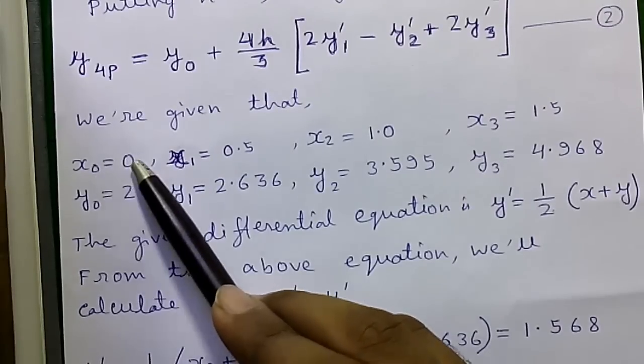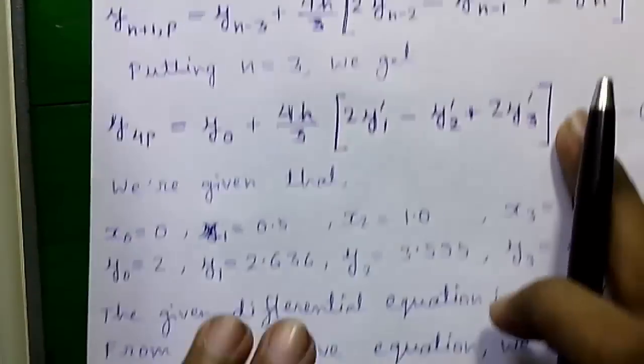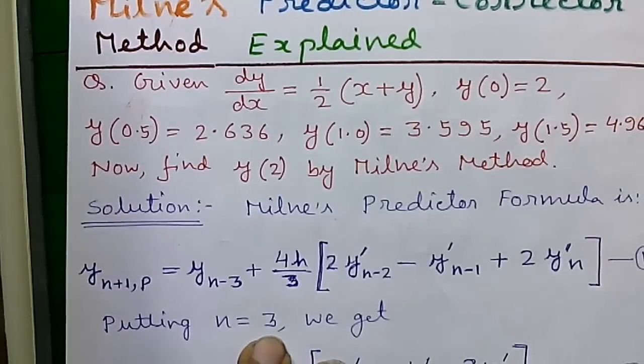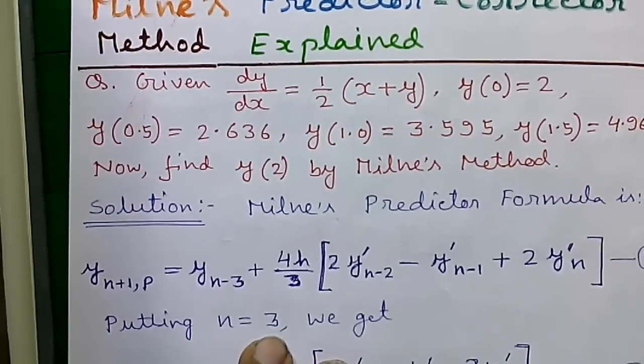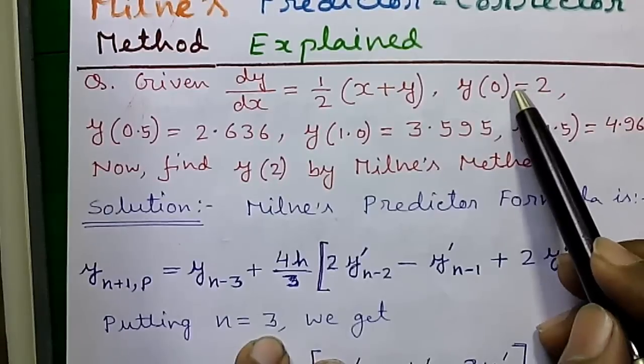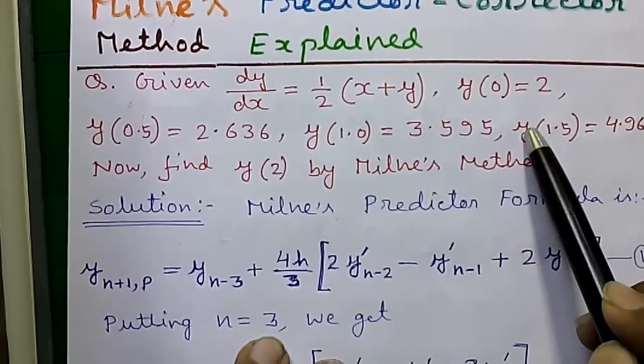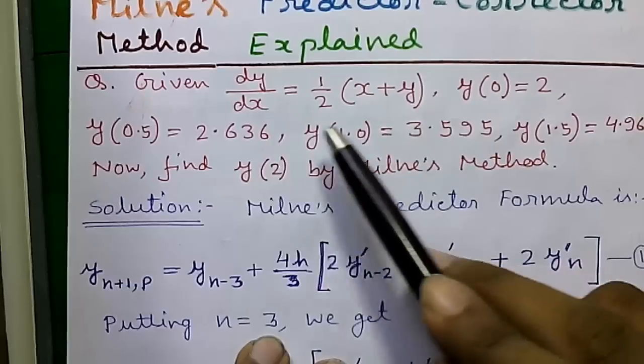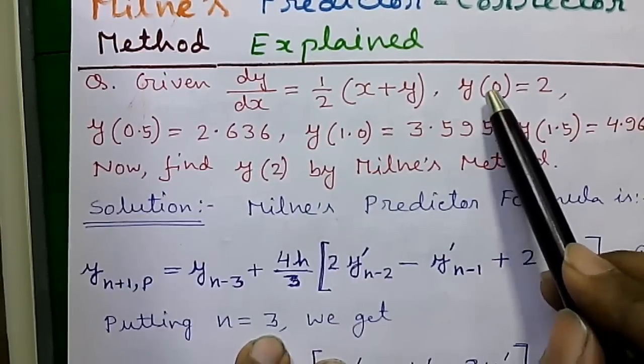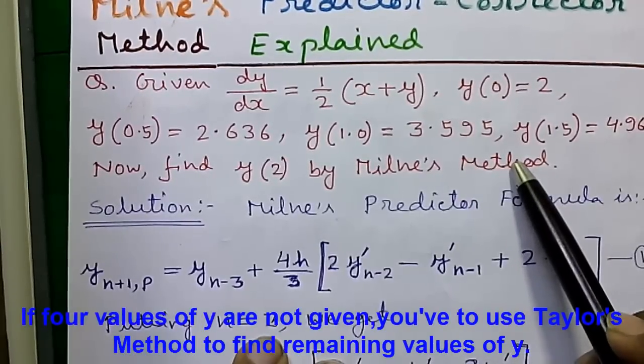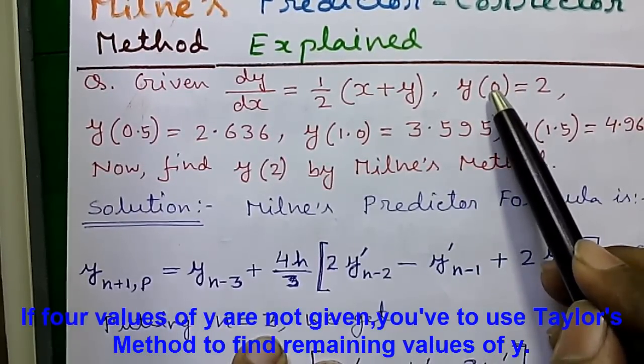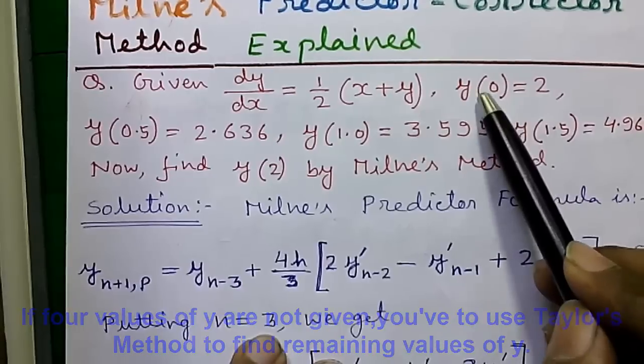So we are given that x(0) equals 0 and y(0) equals 2. Remember for Milne's method and Adams-Bashforth method to work we need all total 4 values of y to start our calculation. If not then you have to find out the values by Taylor's method.